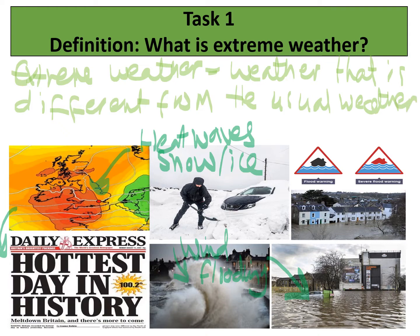It's like having a heat wave in December — that's not normal. It's like having lots of snow in June — that's not normal. So that would be classed as extreme weather.